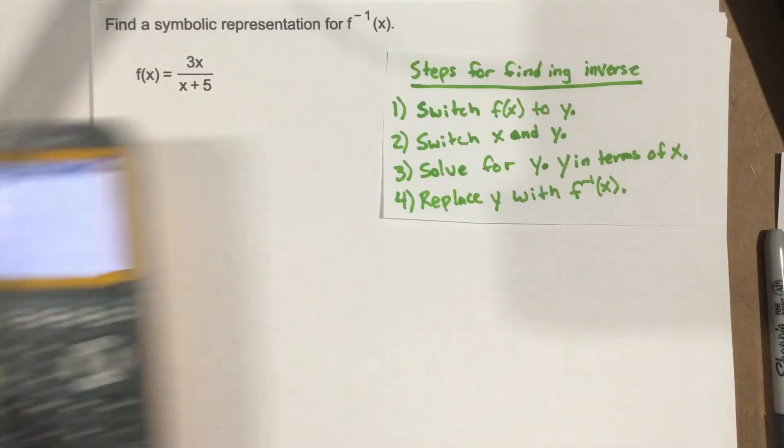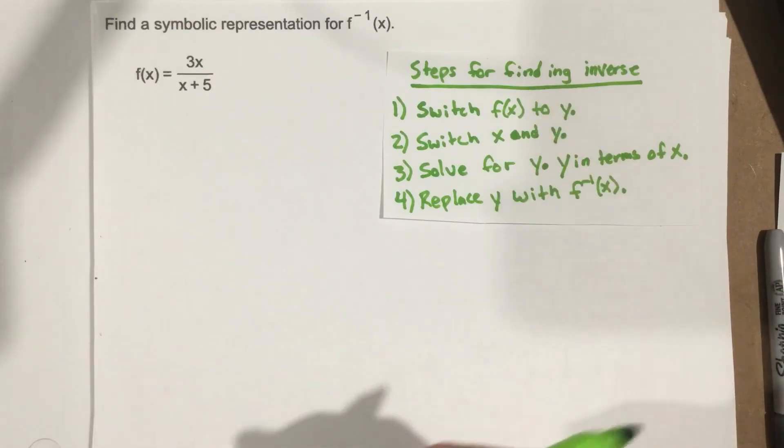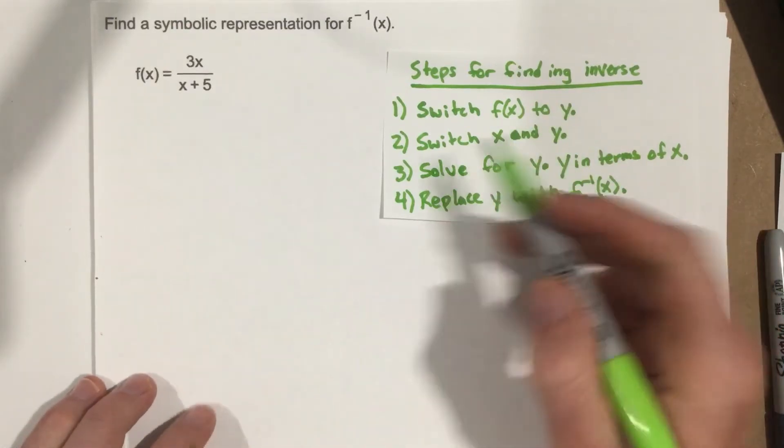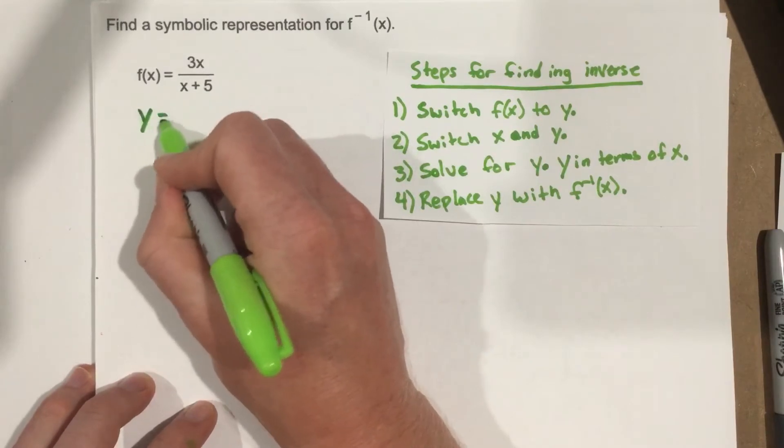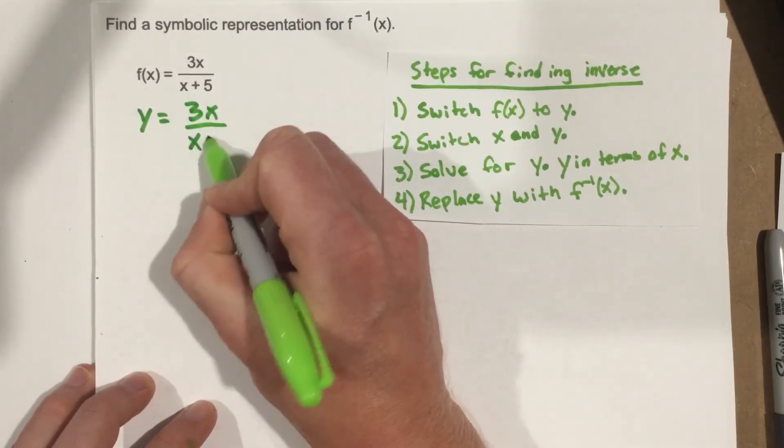If we think this one's one-to-one, we can actually go through the steps. So the first step is to switch f(x) to y. So we get y equals 3x over x plus 5.